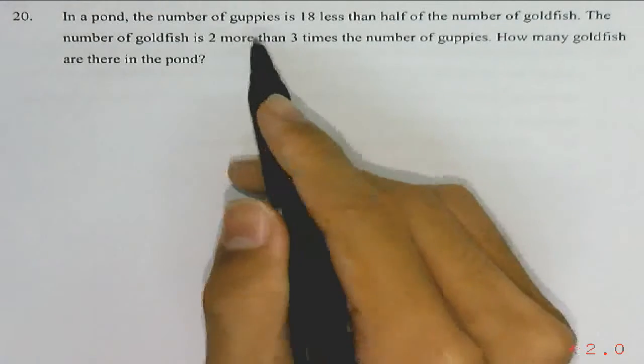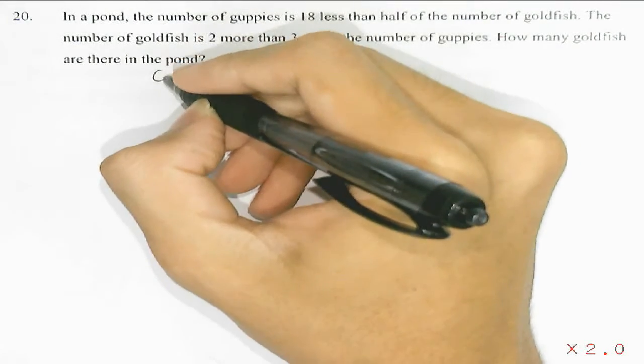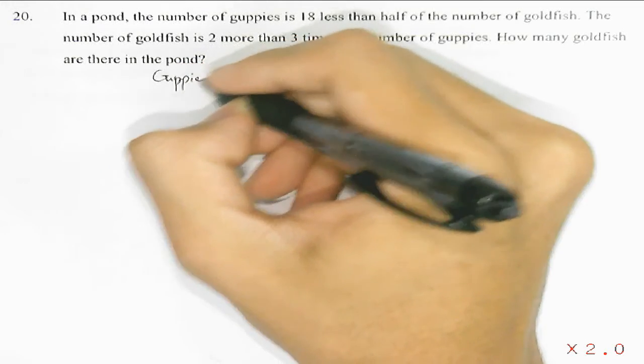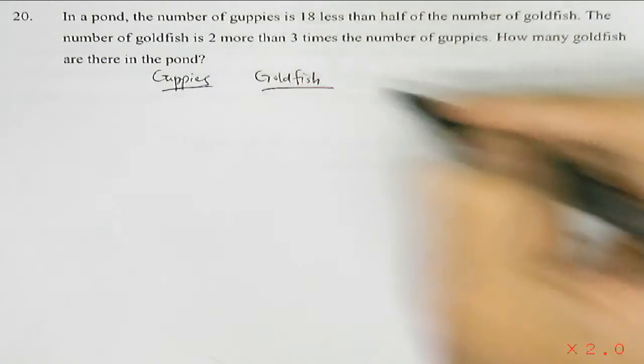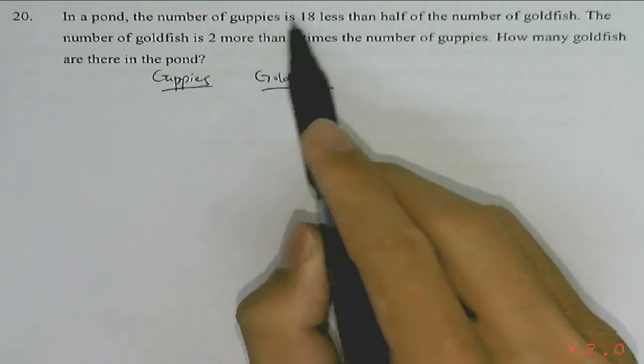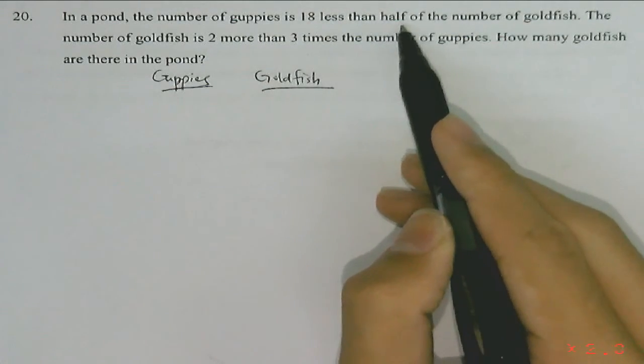In this pond, we have guppies and goldfish. The number of guppies is 18 less than half the number of goldfish.